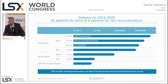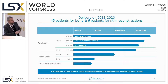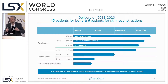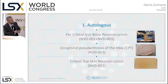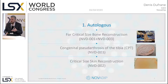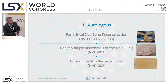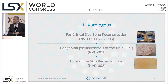We are now able to begin the tech transfer to move into clinical trials with the skin autologous program for critical size tissue defects. We are also in in vivo and in vitro development with the off-the-shelf and cell-free products. For the autologous product, the first product for bone reconstruction is like a plasticine that you can put directly into a large bone defect — as seen with NVD01 and NVD03 — and we have exactly the same philosophy with NVD002 for skin reconstruction.